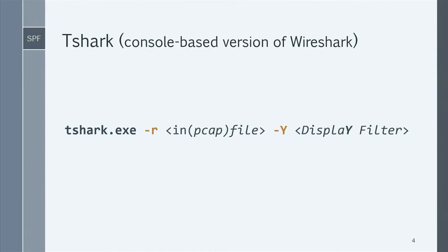TShark is the console version of Wireshark. The '-r' flag takes a PCAP file and '-Y' is where you write your display filter. There is a difference between display filters and capture filters: display filters work with a static PCAP file you're already analyzing, while capture filters work in real time as you're capturing traffic.